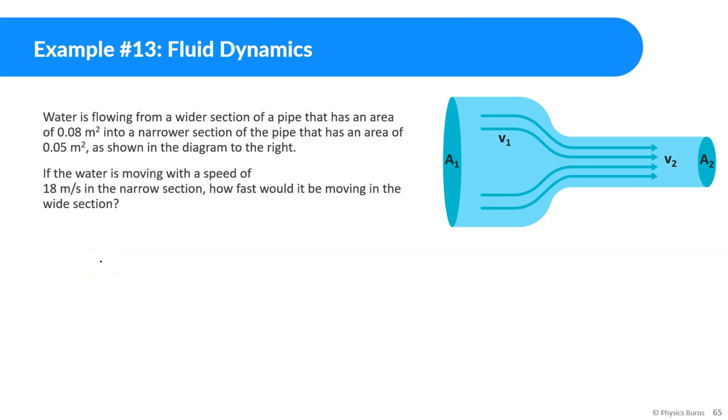All right, so let's look at this math example. First math example for fluid dynamics. Water is flowing from a wider section of a pipe that has an area of 0.08 meter squared into a narrower section of the pipe that has an area of 0.05 meter squared, as shown in the diagram on the right. If the water is moving with a speed of 18 meters per second in the narrow section, how fast would it be moving in the wide section?